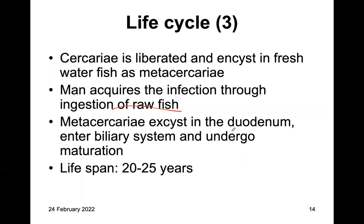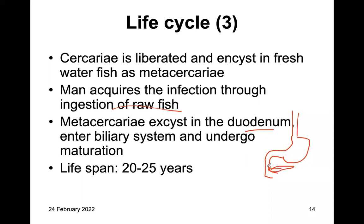Metacercariae excyst inside the duodenum. The bile duct connects here to the duodenum. Once the metacercariae are ingested into the duodenum, they will migrate up into the biliary tree and biliary system to undergo maturation. This can take up to 25 years, so this is a long-term infection.